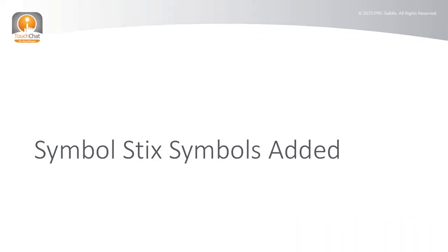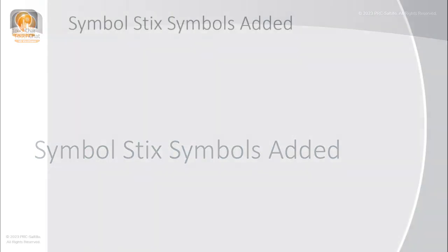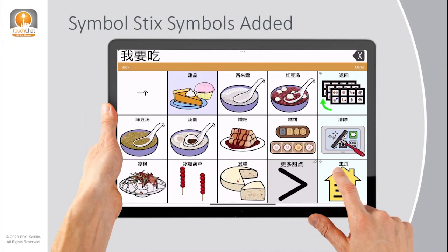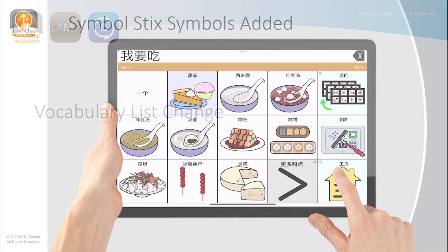The SymbolStix library has been updated. Over 400 symbols have been added to the SymbolStix symbol library, including culturally appropriate symbols to support the new Mandarin vocabulary files.